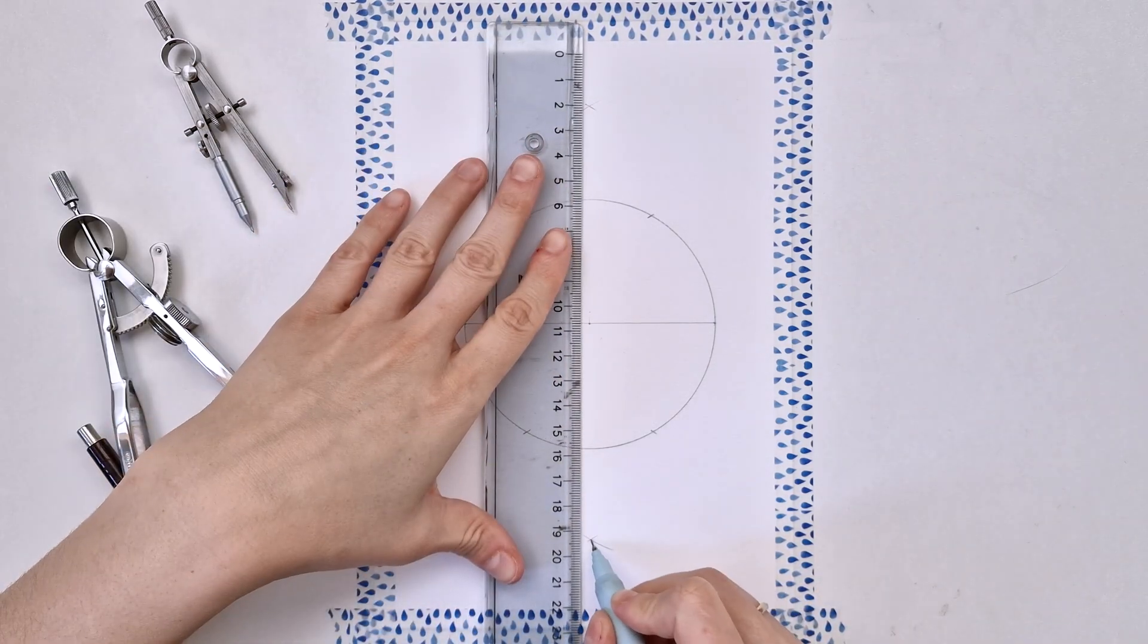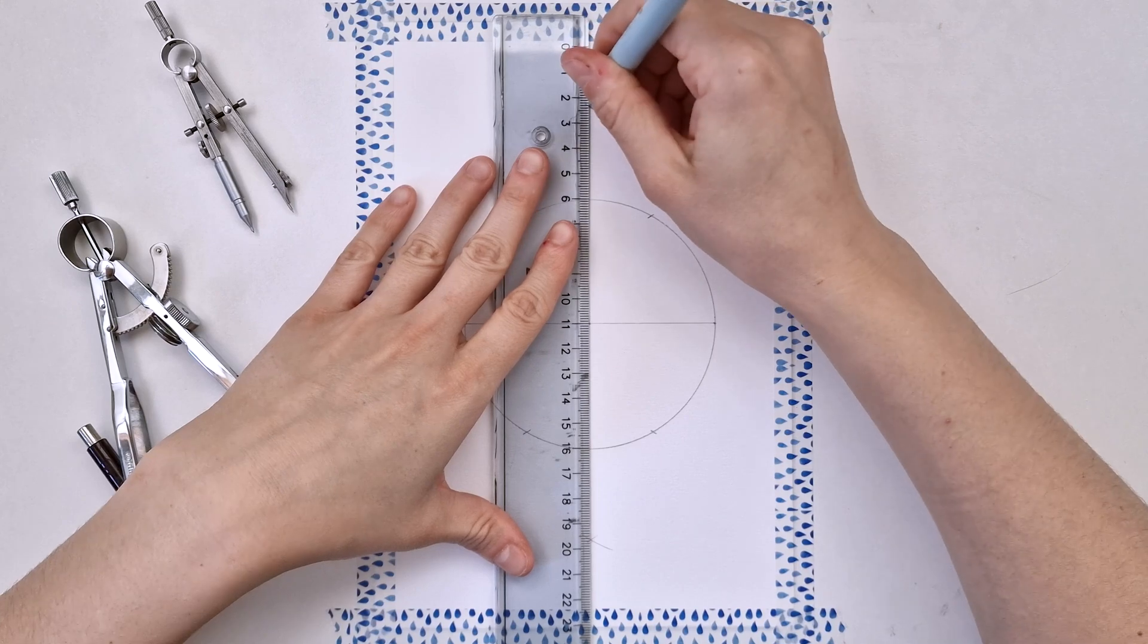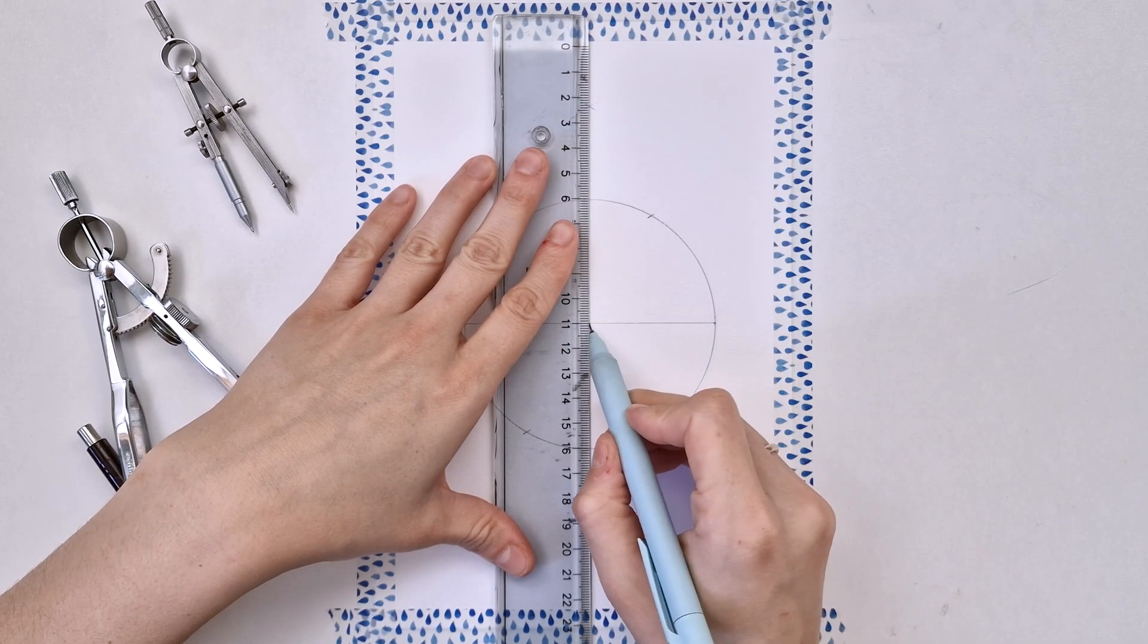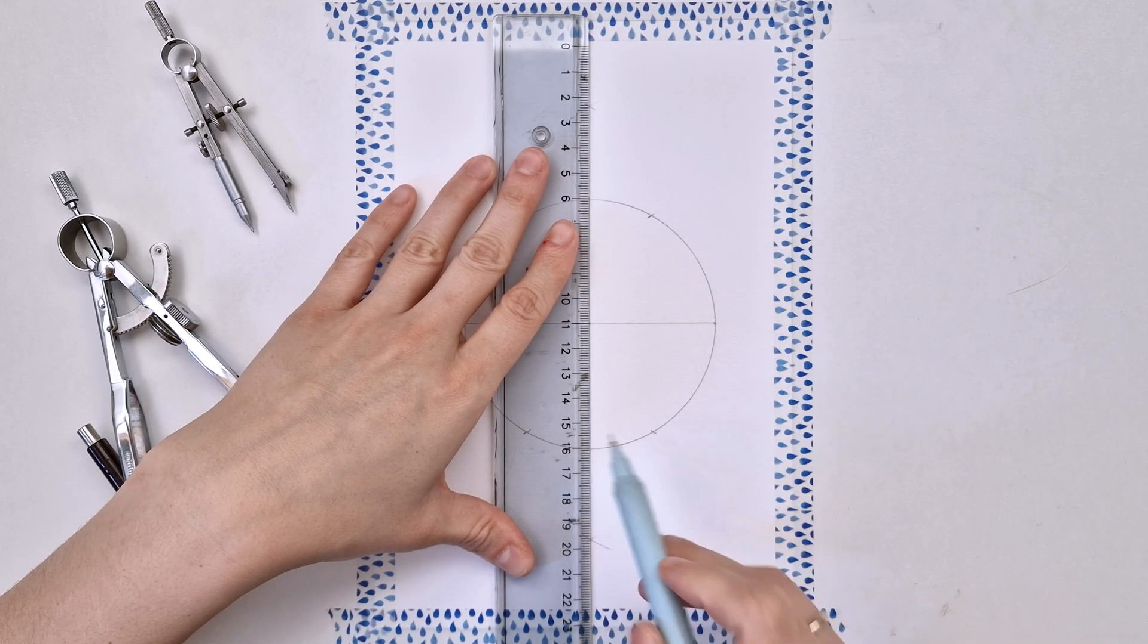And the intersection between these marks is what I will use to align my ruler and draw the vertical line.